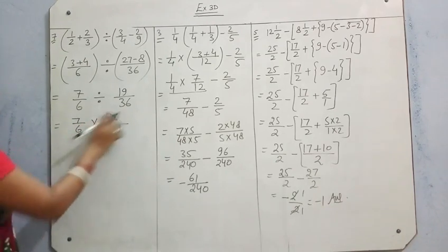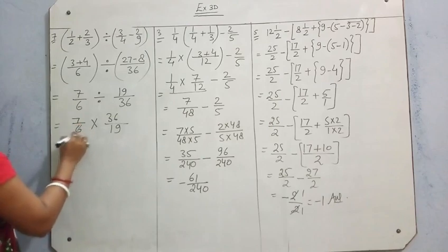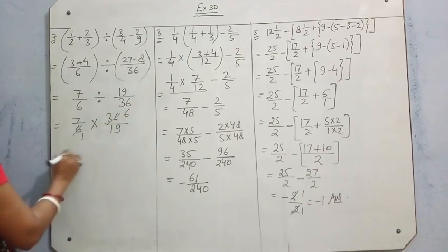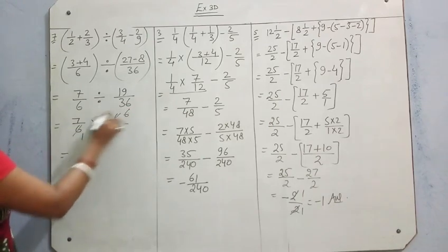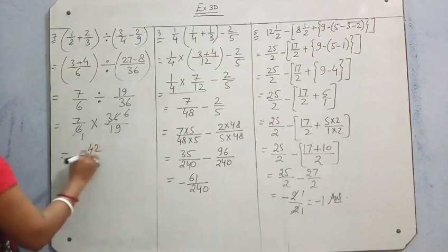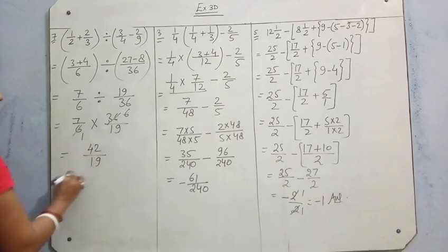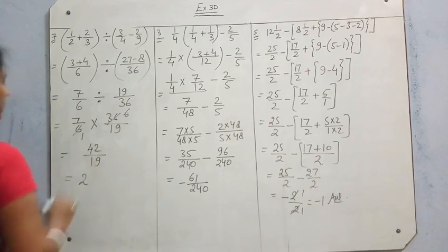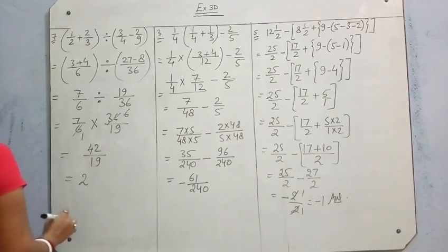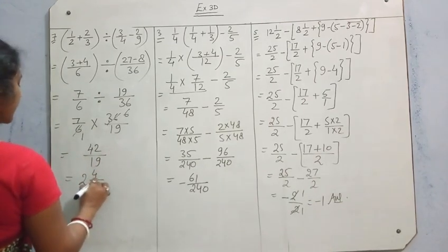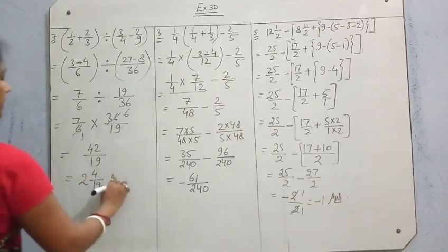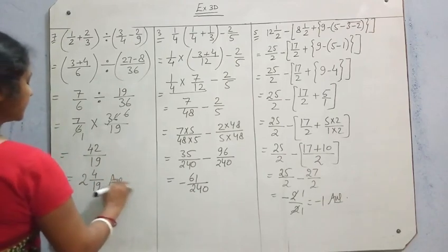So we have 7/6 divided by 19/36. Division changes to multiplication with the reciprocal: 7/6 multiplied by 36/19. Cancel 36 by 6 — 6 sixes are 36. Now multiply: 7 times 6 is 42 by 19. Change to mixed fraction: 19 times 2 is 38, remainder 4. So the answer is 2 and 4/19.